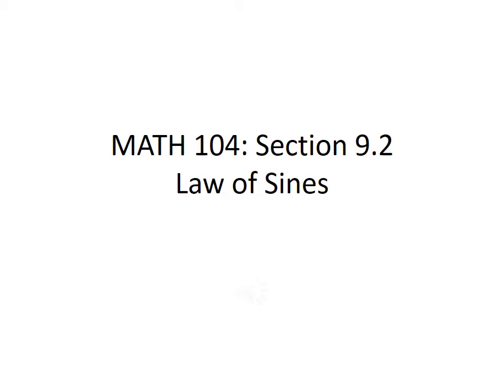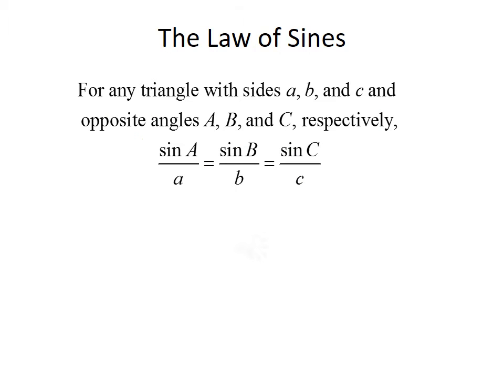In this lecture, we're going to talk about solving general triangles using the Law of Sines. The Law of Sines states that for any triangle with sides a, b, and c, and opposite angles A, B, and C respectively, the ratio of the sine of the angle divided by the corresponding side will be equal. So sine of A divided by a equals sine of B divided by b equals sine of C divided by c.